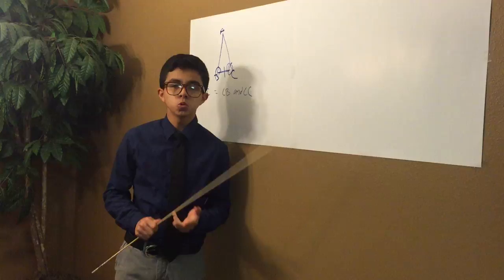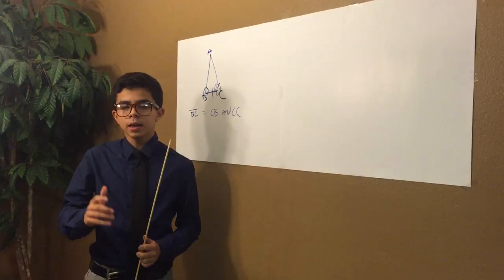Angle-side-angle postulate theorem is when two angles and an included side of one triangle is congruent to two angles and an included side of another triangle, for example shown right here.